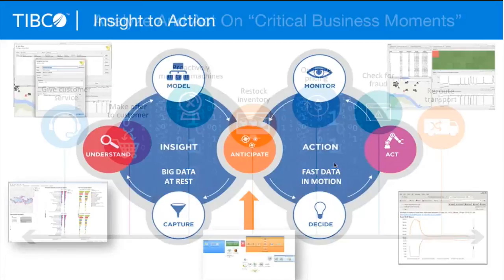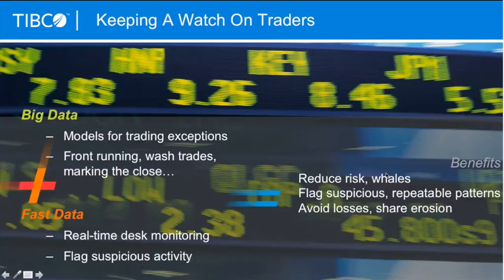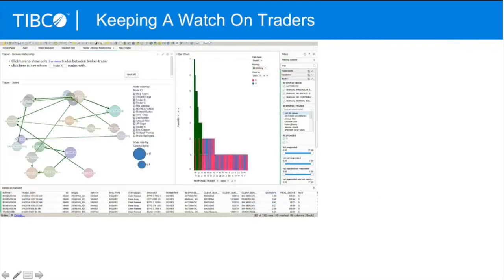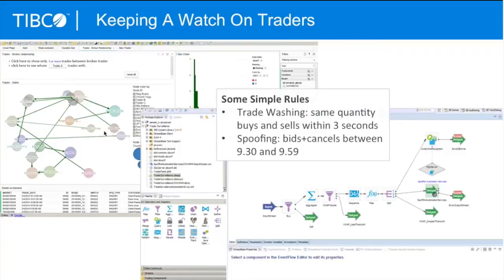We see a number of examples of this: customer service offers, maintaining machinery, restocking inventory, optimizing pricing, checking for fraud, rerouting transportation. We do trader surveillance — figuring out the patterns for front-running, trade-washing, and similar things in Spotfire, then monitoring those on real-time fast data in motion to reduce trading violations. The patterns are identified in Spotfire and published out to our Streambase application for surveillance. Simple rules like wash trades and spoofing can be tracked.